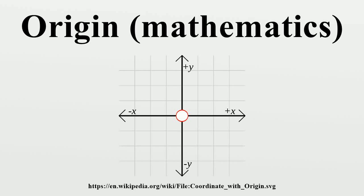In mathematics, the origin of a Euclidean space is a special point, usually denoted by the letter O, used as a fixed point of reference for the geometry of the surrounding space. In a Cartesian coordinate system, the origin is the point where the axes of the system intersect.